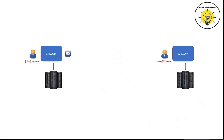Now, if john@xyz.com forwards this email to an external user, the SPF check will fail. This is because the SPF check will be performed against the xyz.com domain, which forwarded the email. This is one of the limitations of SPF record: it does not work, or it fails, when emails are forwarded to other external users.